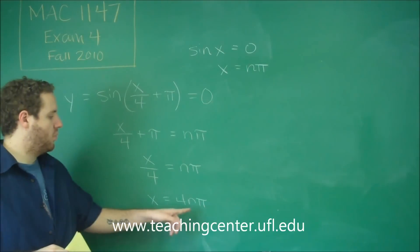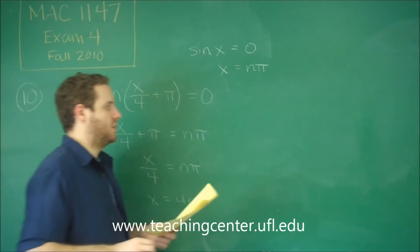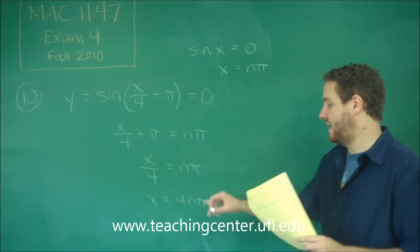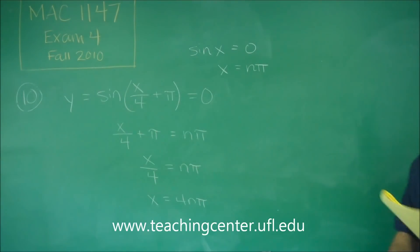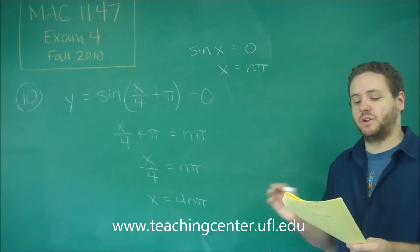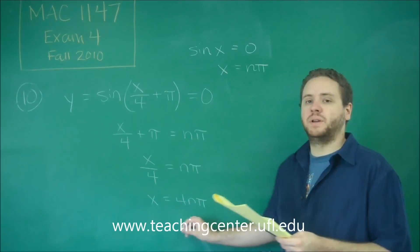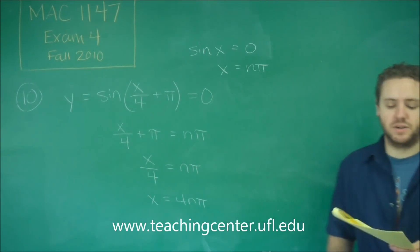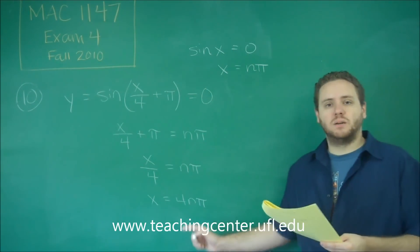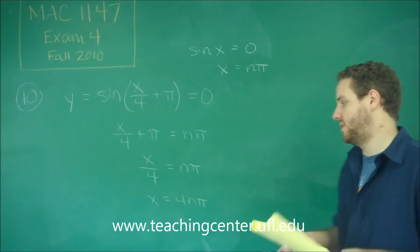So we can have every possible integer of pi that is a multiple of 4. To get some of the specific values — since the multiple choice answers here are given as a list rather than a general answer — just start plugging in n equals 0, 1, negative 1, 2, negative 2 to see what values you get.